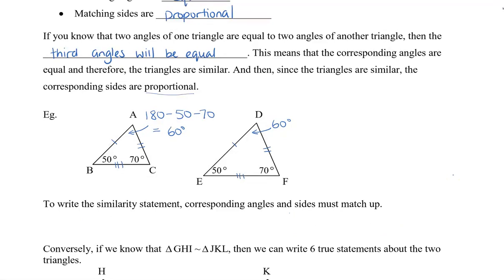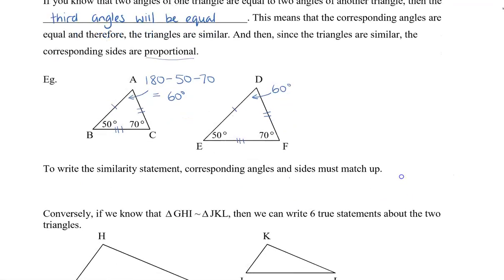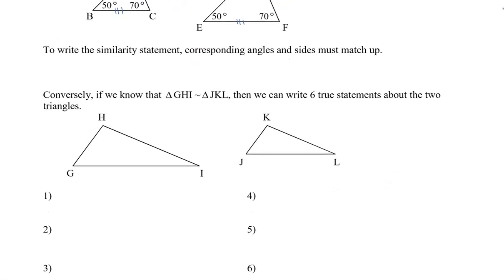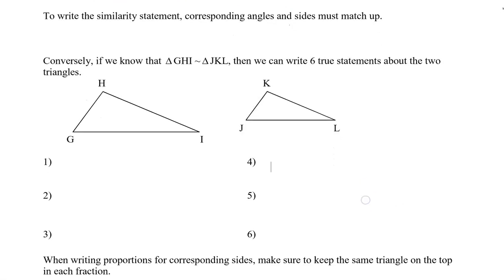Conversely, meaning in the other direction, if we know that triangle GHI is similar to JKL, meaning that we already know that two triangles are similar, then we can write six true statements about the two triangles. For example, we know that angle G equals angle J, so I'm going to mark that on my triangle with one mark.